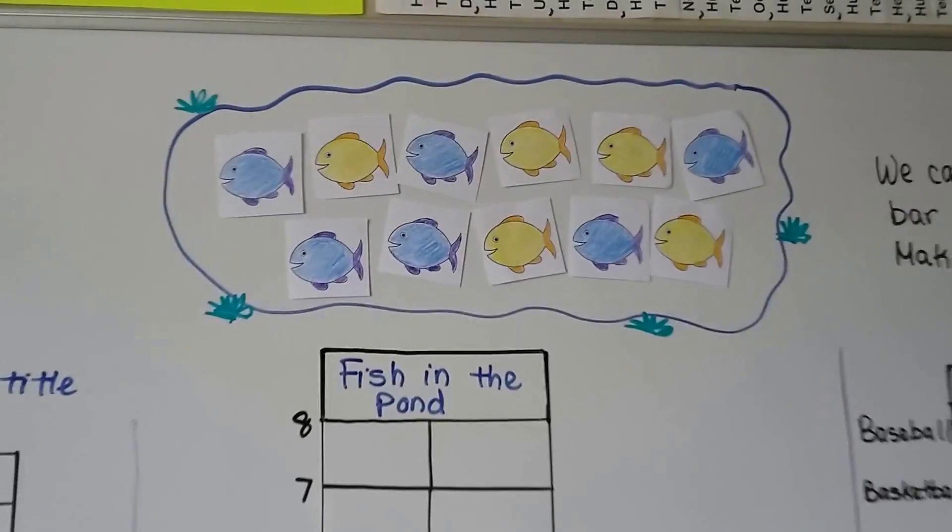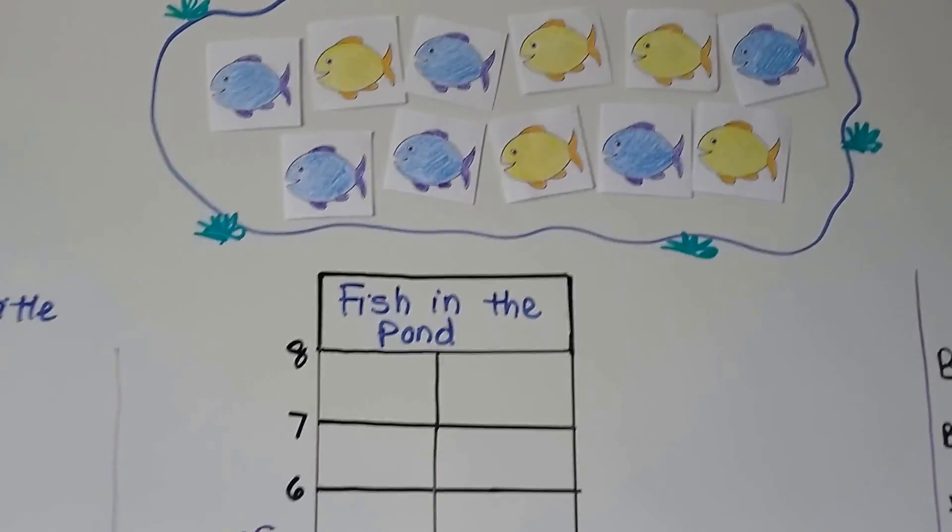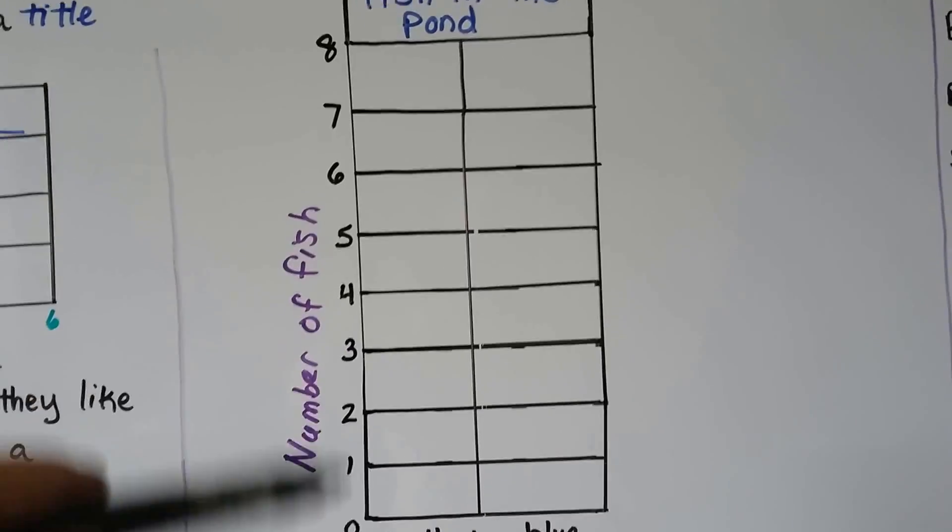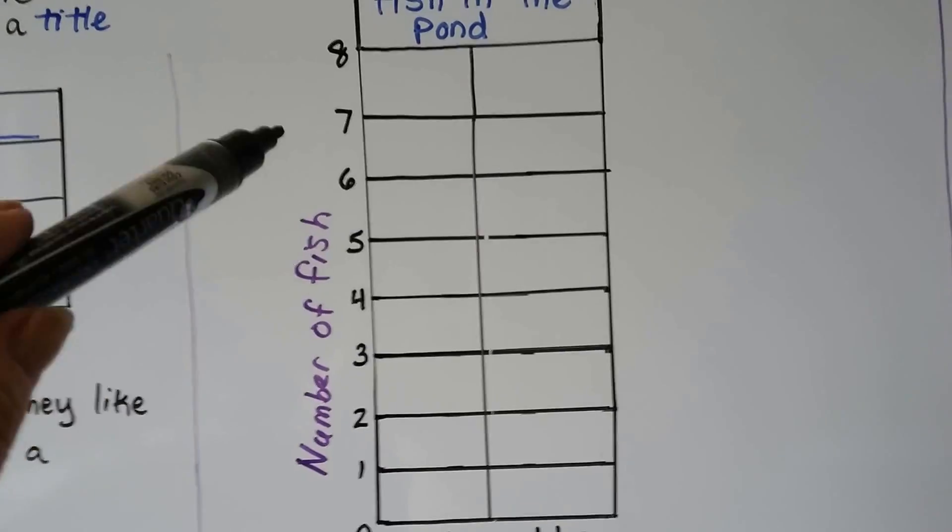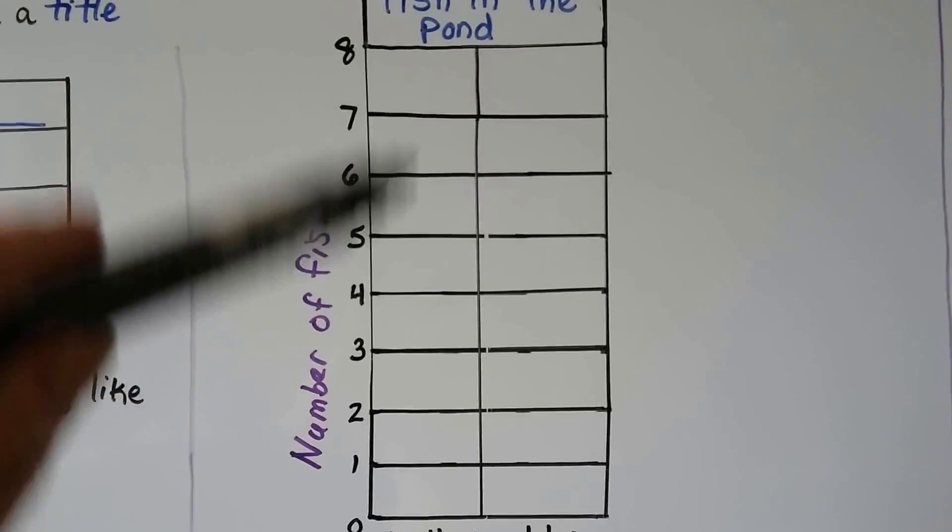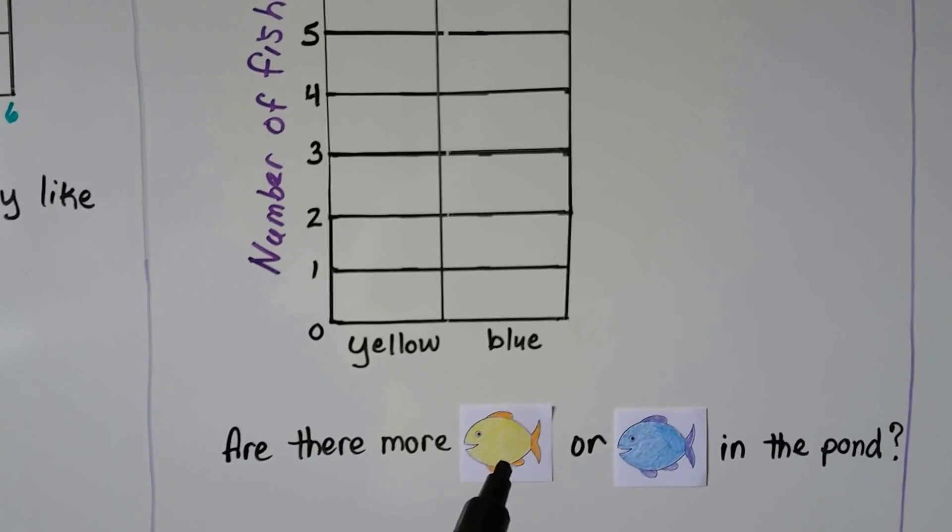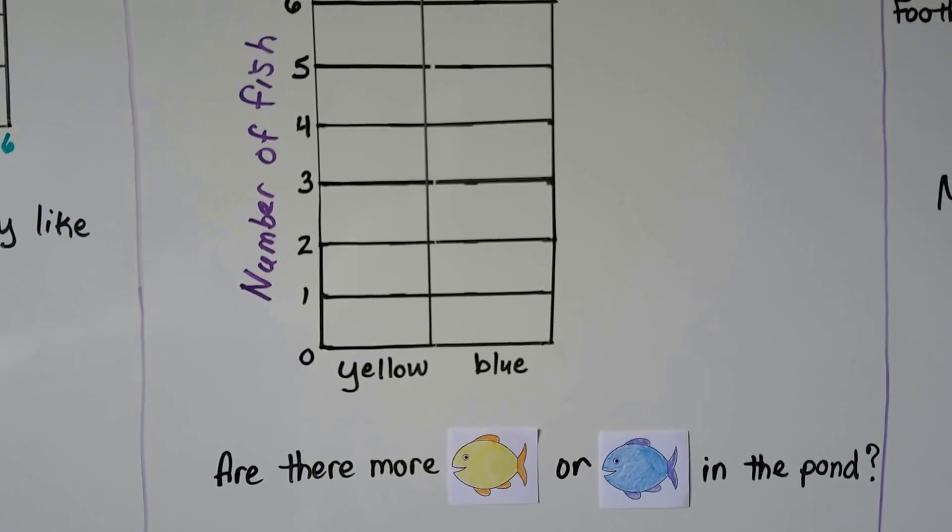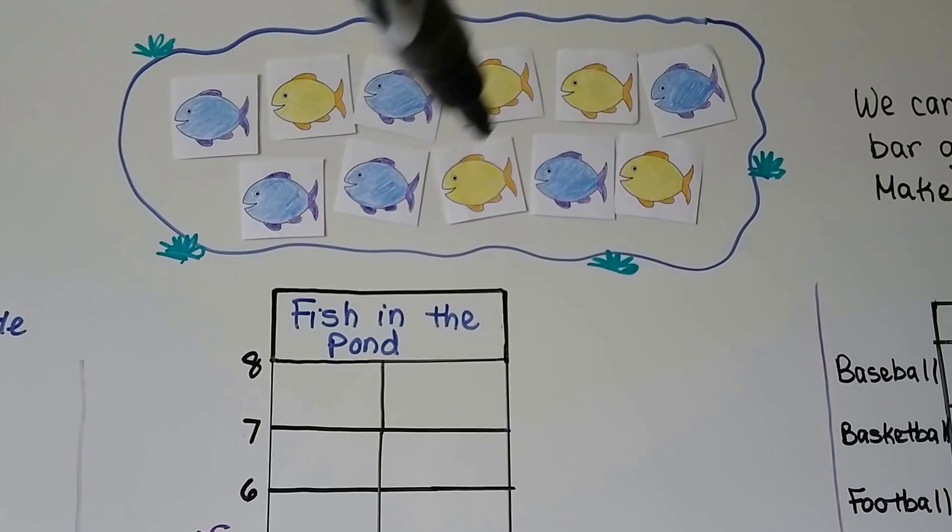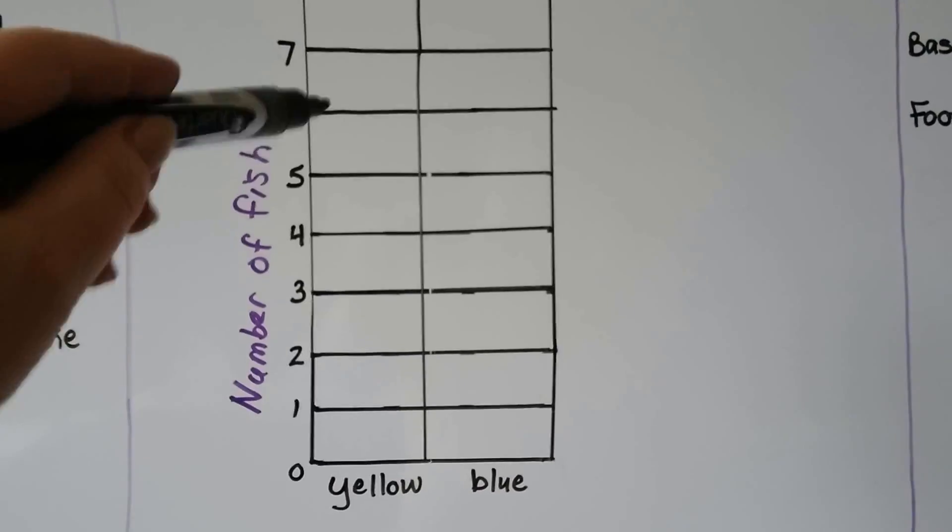Now take a look at this. Here's some little fishies in a pond. We have blue and yellow fish in a pond. And the name of the bar graph is fish in the pond. This is the number of fish for our scale label and yellow or blue. And then we're going to fill the bars going up vertically. It wants to know, are there more yellow fish or blue fish in the pond? So let's count them. How many yellow fish do we see? One, two, three, four, five. So we can fill the bar graph up to five right here for the yellow fish.